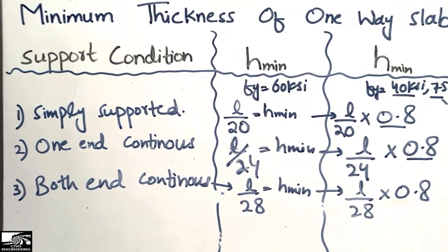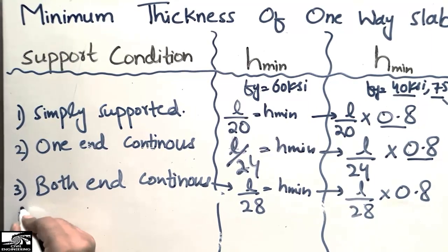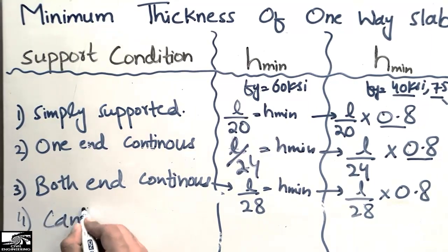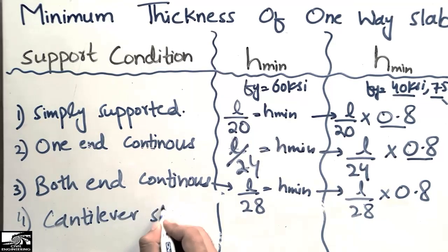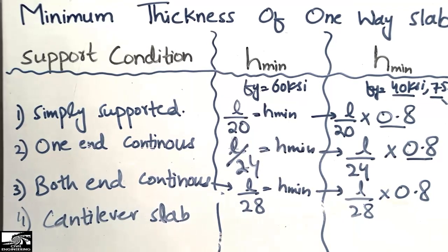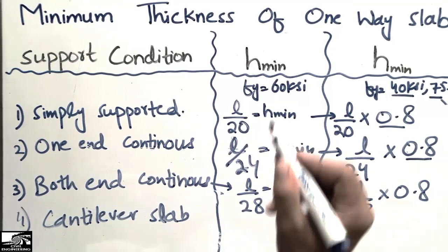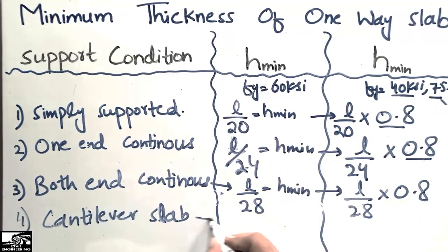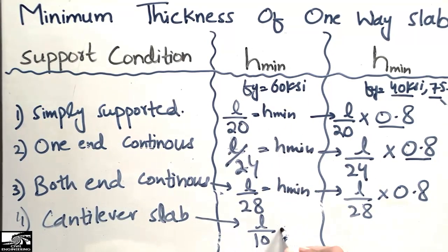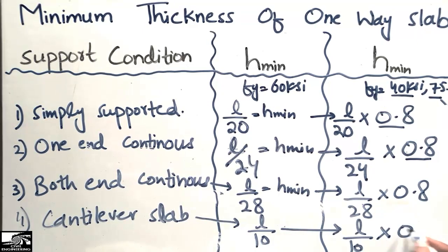The last type of slab is the cantilever slab. In the case of the cantilever slab, the minimum depth of the slab is taken as l/10. For steel other than grade 60, such as grade 40, multiply l/10 by the factor 0.8.